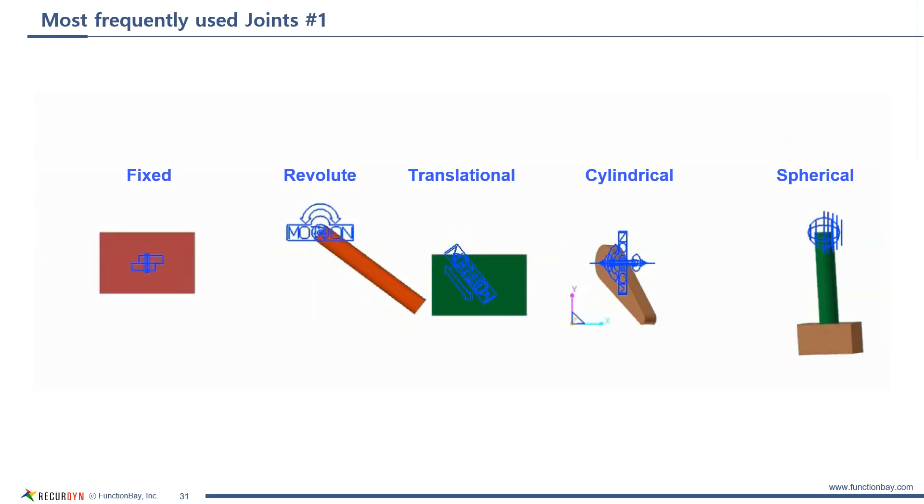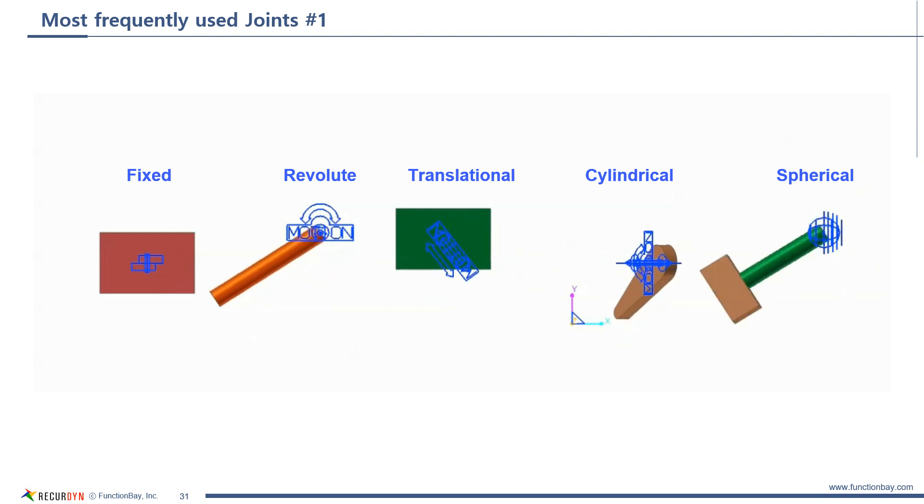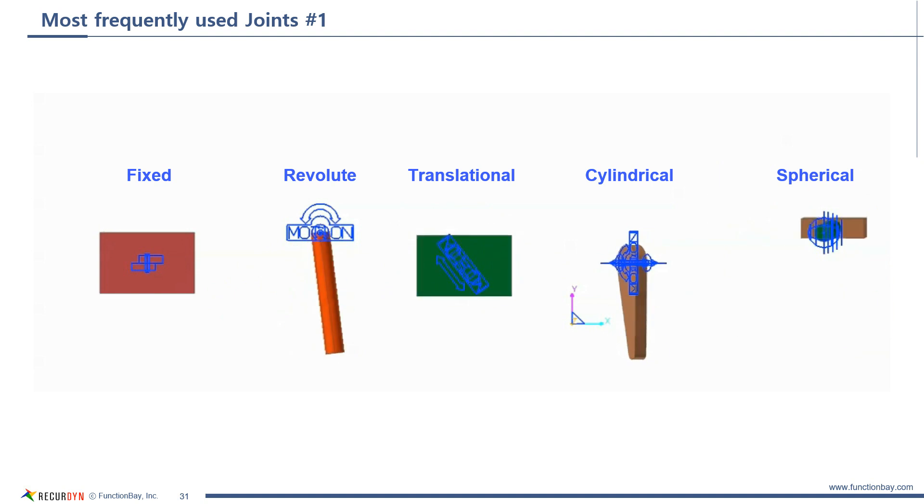These are the most frequently used joints. You may have seen this page in the start kit. It is easy to understand how each joint works.